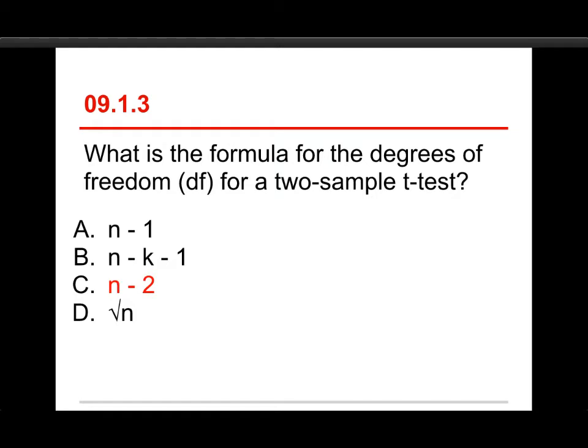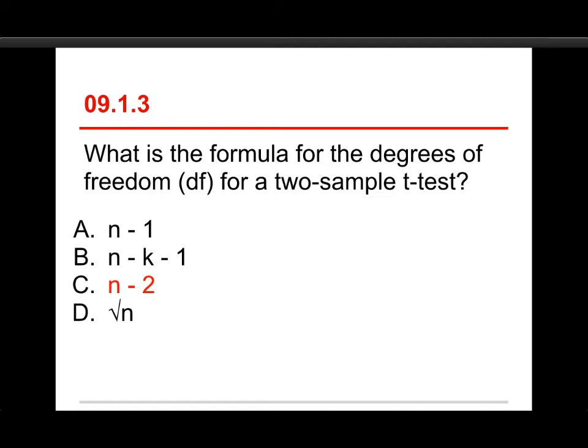Very briefly, n-1 shows up a lot when you're looking at the one-sample tests, or when you're calculating the variance or the standard deviation for a sample. n-k-1 shows up in something called the analysis of variance, which is in the next chapter. And the square root of n shows up a lot as a part of the equation for the standard error. Anyhow, n-2 is the one, and let's take a look at how it gets there.